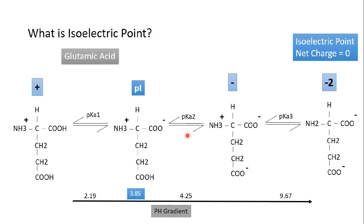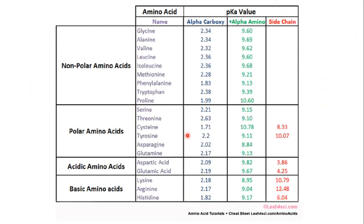All the pKa values of different amino acids are already known, so you can find a table listing pKa1 and pKa2 for all amino acids. Some amino acids have a pKa3, like glutamic acid. The isoelectric point is simply (pKa1 + pKa2) / 2, because it is the middle point between pKa1 and pKa2.